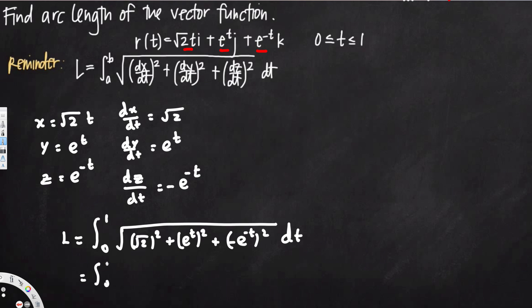Let's simplify. Going from 0 to 1, inside the square root we are going to have 2, then e squared becomes e^(2t), and squaring negative e^(−t) — the negative turns positive and the exponent multiplies by 2 — so we get e^(−2t).